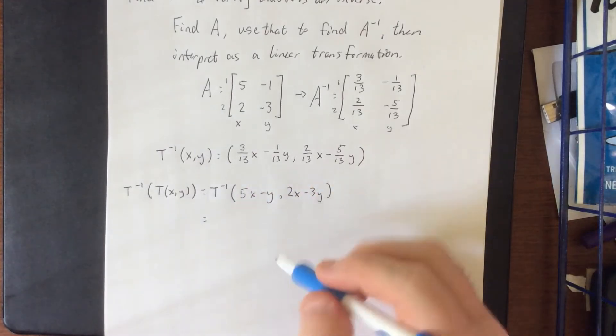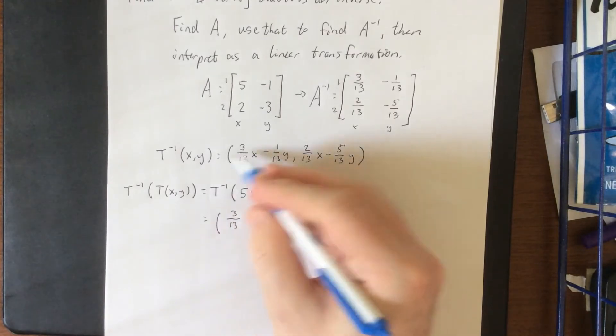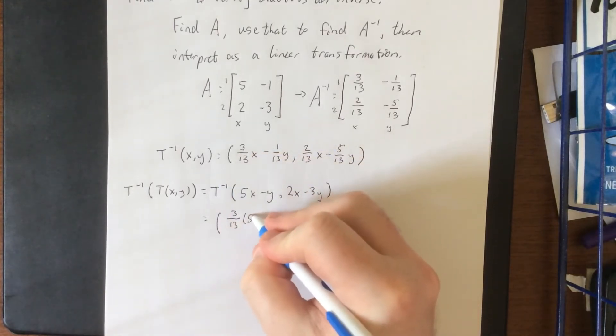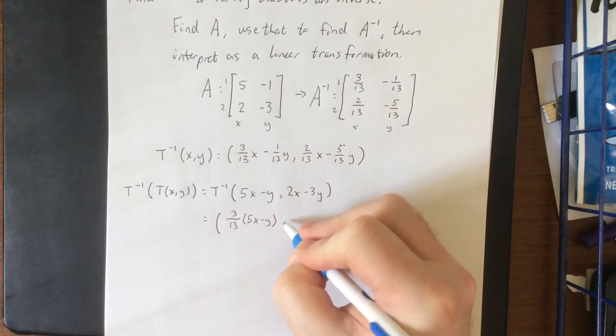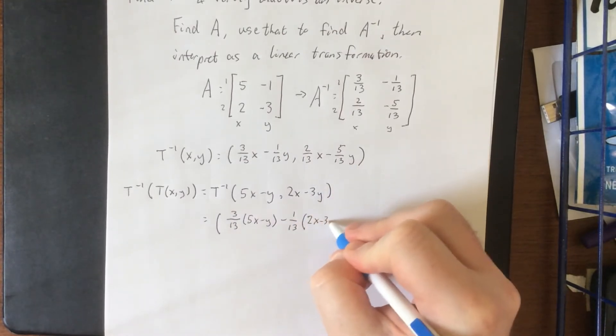Now the inverse function states the following: we are going to take 3/13 of the first component, minus 1/13 of the second component, which was in this case 2x minus 3y.